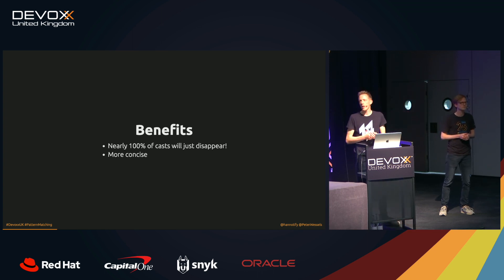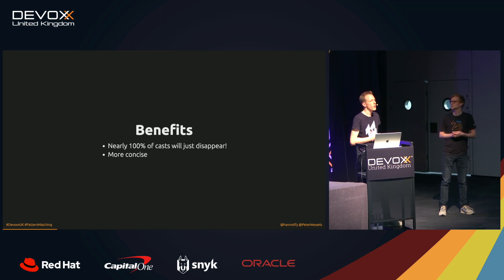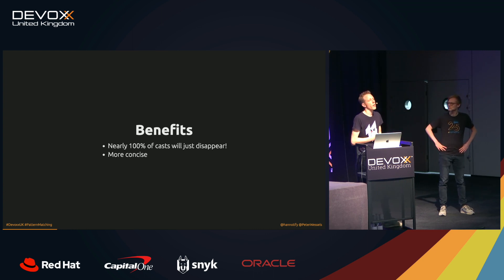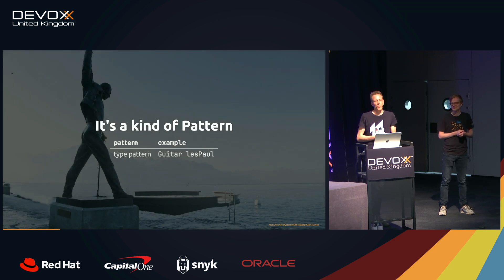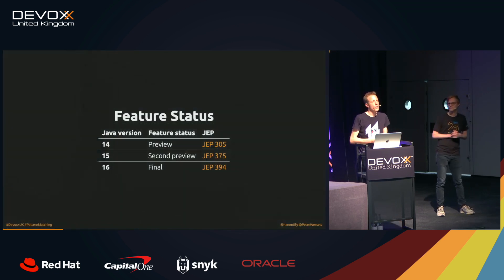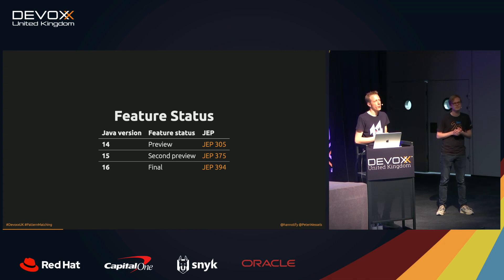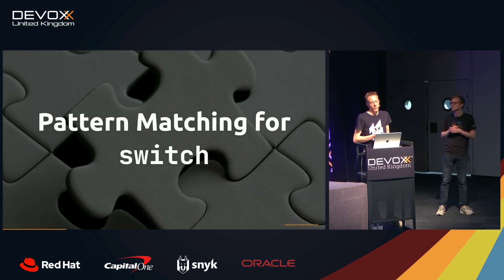To summarize the benefits: we won't see many more casts in everyday code anymore; it's obviously more concise — it takes less time to write, read, and understand. The first pattern kind is the type pattern. Starting from Java 16, this feature is in final status, so it won't change drastically anymore — you can use it in production today.